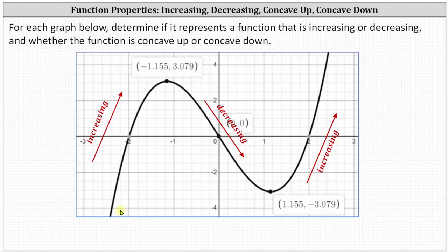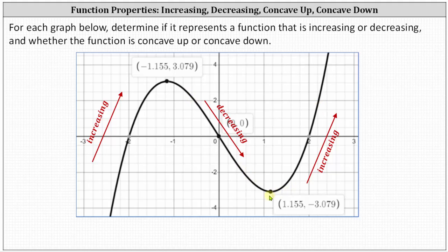Analyzing this graph: on the left, the function is increasing; in the middle, it's decreasing; and on the right, it's increasing again. Where a function changes from increasing to decreasing, we have a high point or relative maximum. Where a function changes from decreasing to increasing, we have a low point and a relative minimum.